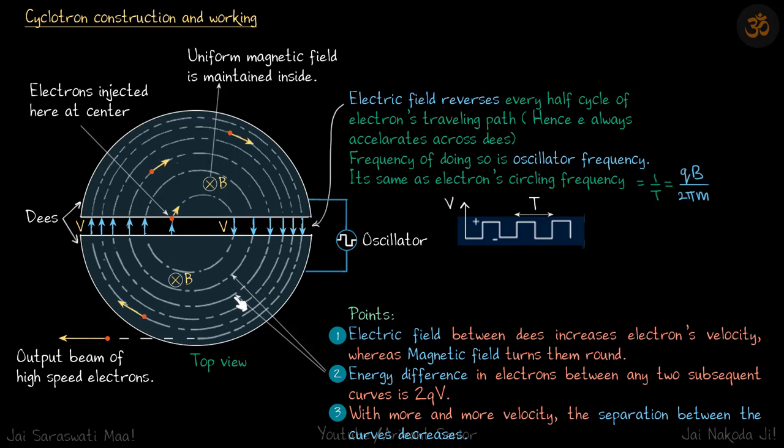In this path, the energy is increased by 2qV. That is the energy difference. With more and more velocity, the separation between the curves decreases. I have not proven it here, but you have to use it. Just think about it, why this should happen. Just pause the video and think.